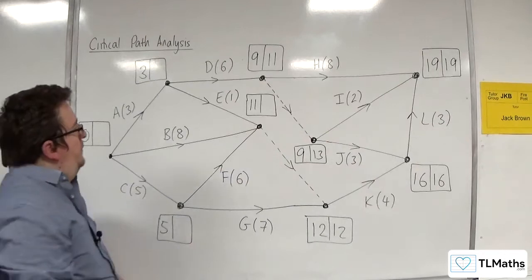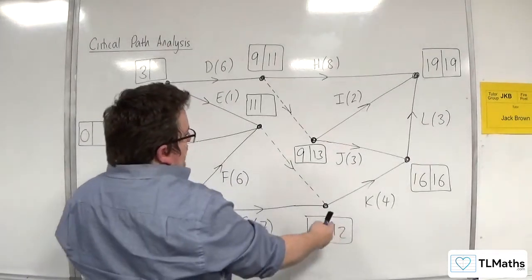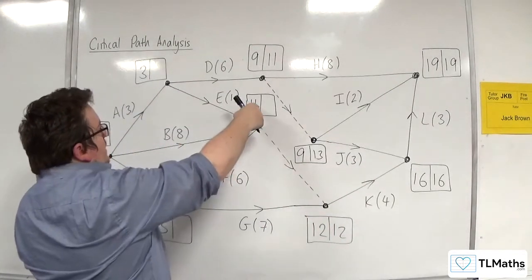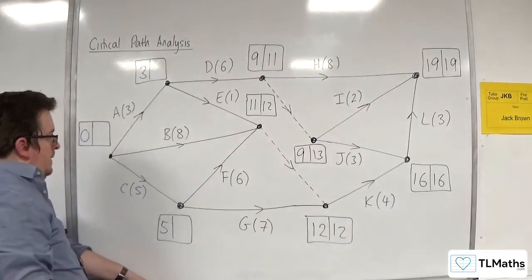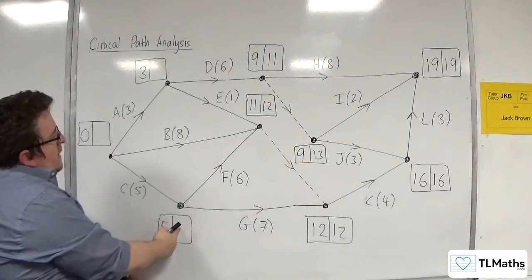So 12, now there's only one route back to E, so 12 take away 0 is 12.